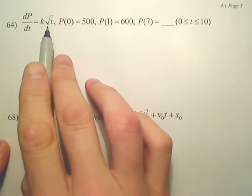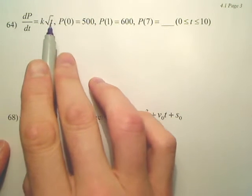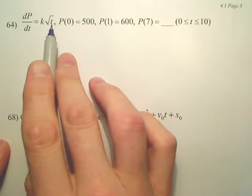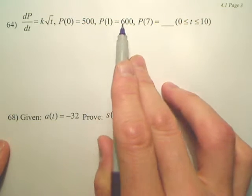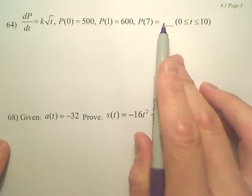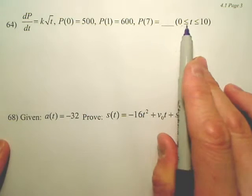The rate of change of the population is this. There's a k and a t, which is kind of annoying, you'll see in a sec. The initial population is 500. The population after one day is 600. We want to know the population after seven days, and the interval is from 0 to 10.